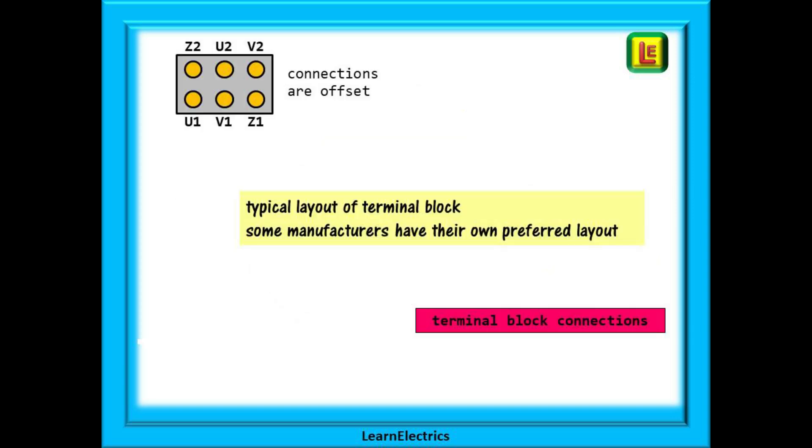Let's begin by looking at the terminal block. It is important that you understand how the windings and other parts are connected to this. The bottom row of posts are labeled U1, V1 and Z1. However the top row is out of sync with the bottom row. The top row is labeled Z2, U2 and V2 and this misalignment helps us to connect the motors correctly with the links. We will look at the common arrangements in this video and some manufacturers will have their own preferred layout. But if you understand the common arrangement it is easy to understand the more unique configurations.